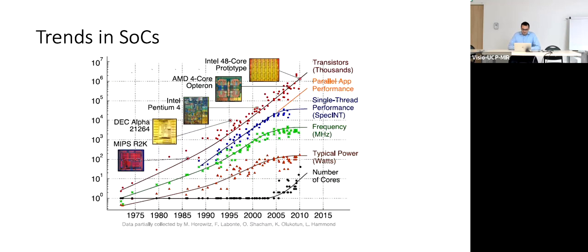When you look for a personal computer, you see text like dual-core or quad-core in the processor description. Instead of having one single processor with increasing transistors year by year, industry started putting more processors together because of heat dissipation and power density problems. This trend became evident starting around the 1990s and is more evident today, with many-core processor systems featuring two, four, sixteen, or even a thousand cores, depending on the application domain.